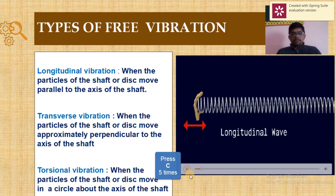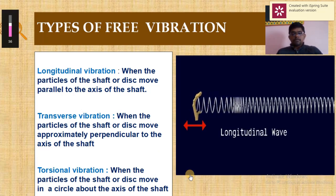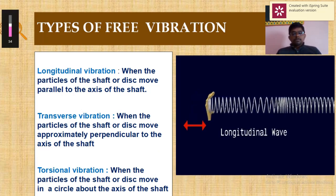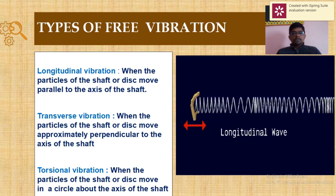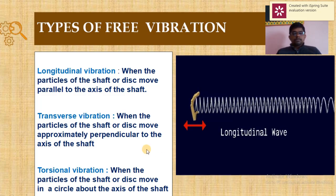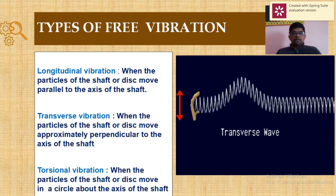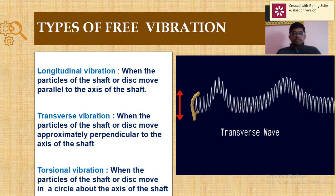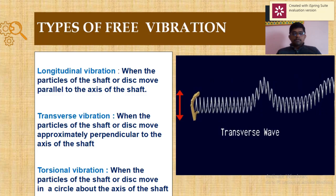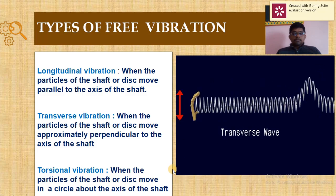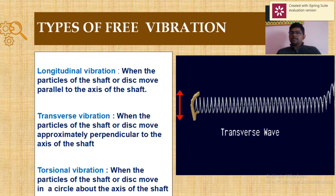In a longitudinal wave, the disturbance that makes up the wave is along the direction in which the wave travels. Longitudinal waves are also referred to as compression waves. In a transverse wave, the disturbance is perpendicular to the direction the wave travels. Hope you understand the difference between longitudinal and transverse vibration.